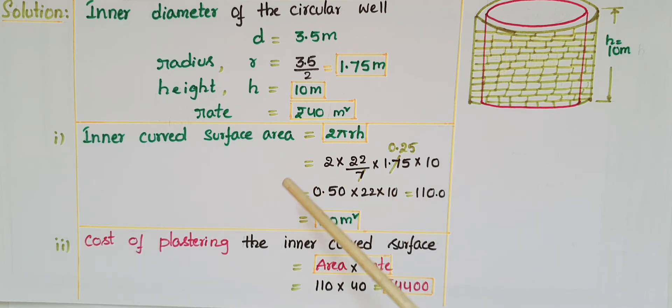Now you have to find the cost of plastering the inner curved surface. Cost = area × rate. Here area is 110 × 40 rupees per meter square = 4400 rupees.